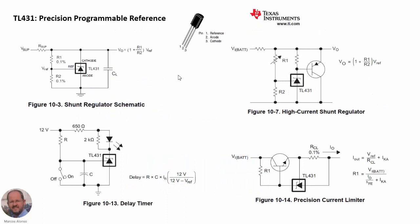TL431 is a precision programmable reference that is very useful in many applications. We are going to use as reference the information from the manufacturer Texas Instruments, though this is not an endorsement over other manufacturers also providing good TL431 devices. It can be used as a shunt regulator to obtain an output voltage. If we want to increase the output current, we can add a bipolar transistor to handle more current at the output.